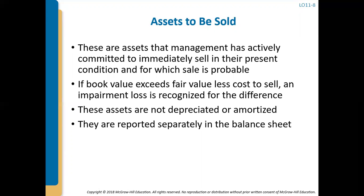Now let's talk about assets to be sold. These are assets that management has actively committed to immediately sell in their present condition and for which sale is probable. If the book value exceeds the fair value less the cost to sell, an impairment loss is recognized for the difference.